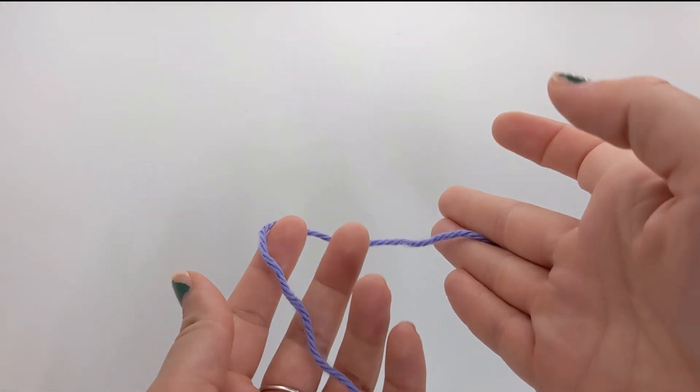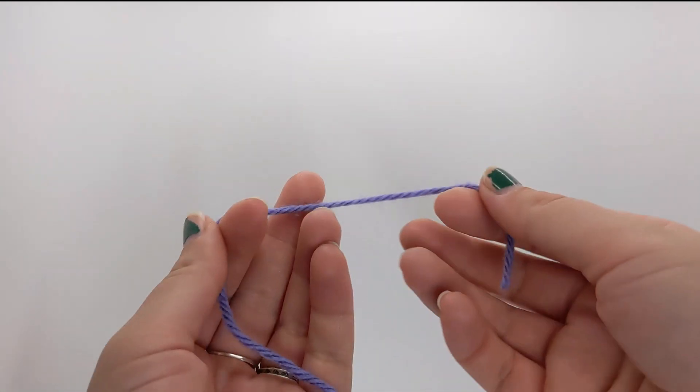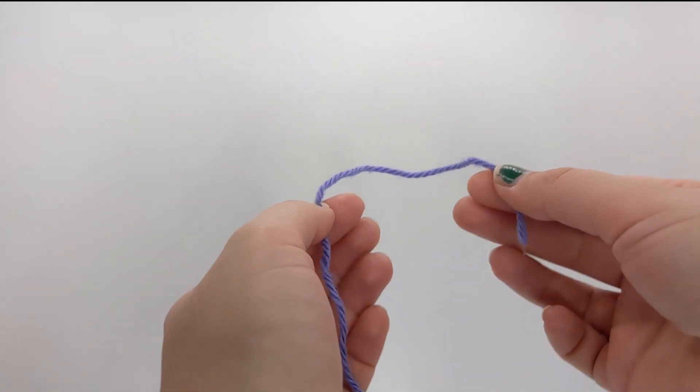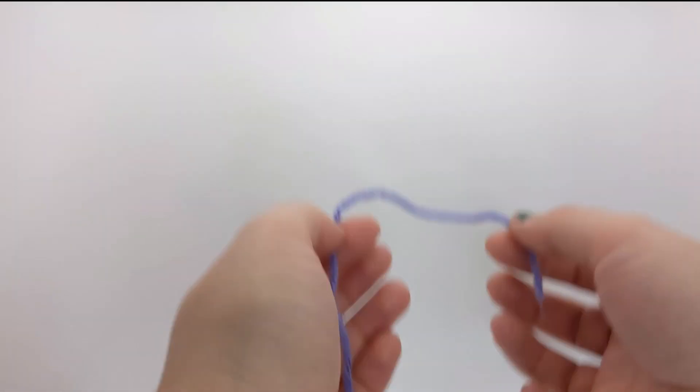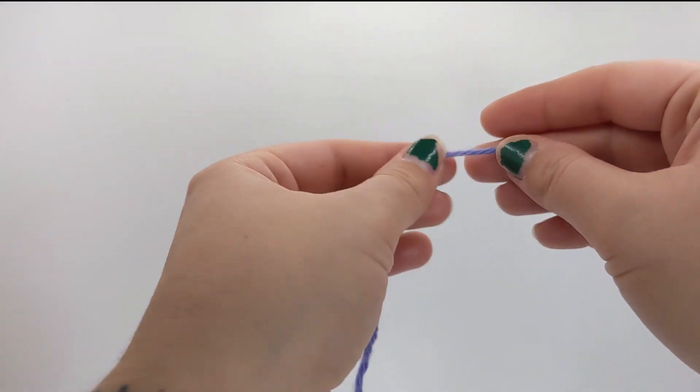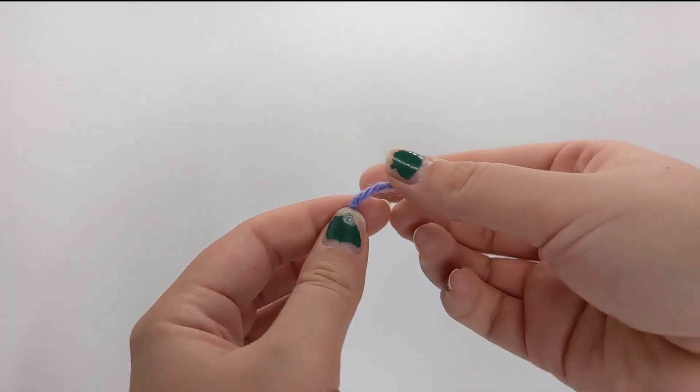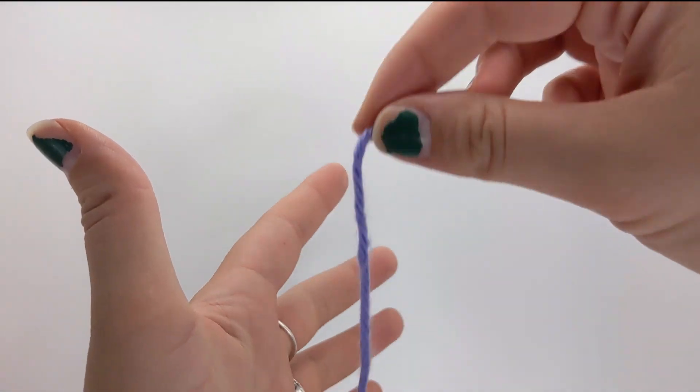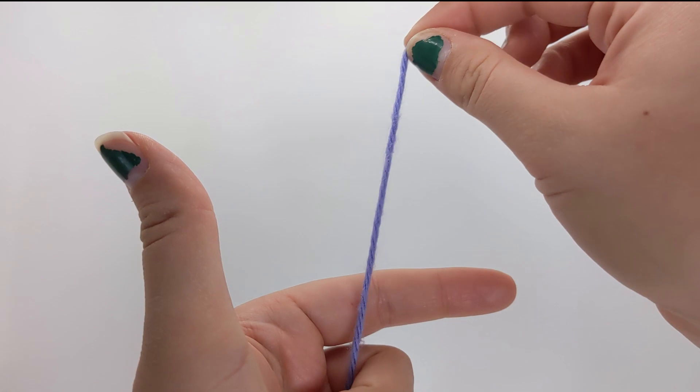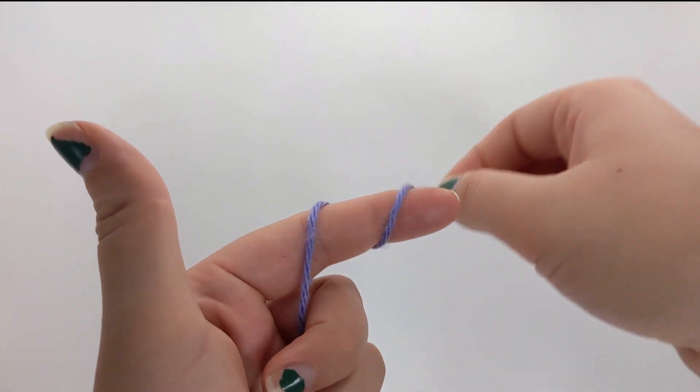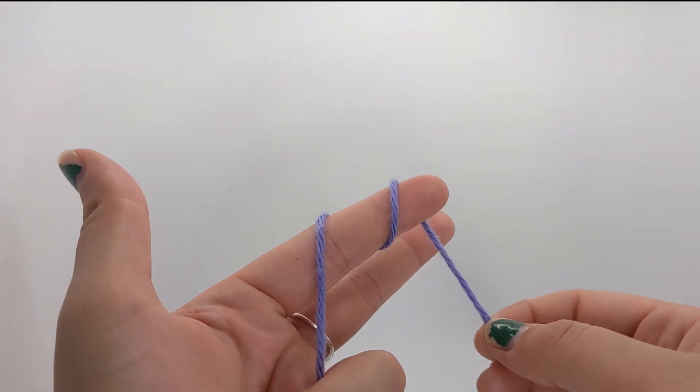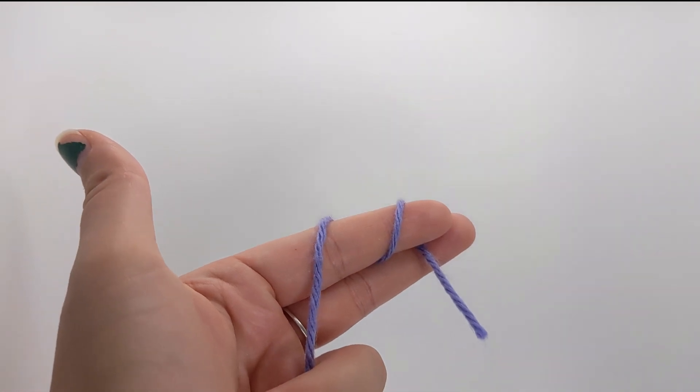And so now to work in the round, you need to learn how to do something called a magic circle. Now these can be a little bit tricky to learn, but they are super useful once you get the hang of them. They're the only thing you really use in amigurumi. They're awesome. So what you're going to do is you're going to take the end of your yarn and you're going to go from in front of your hand, you're going to wrap it back around your finger once and twice. Then I use my middle finger just to help hold it in place while I work.